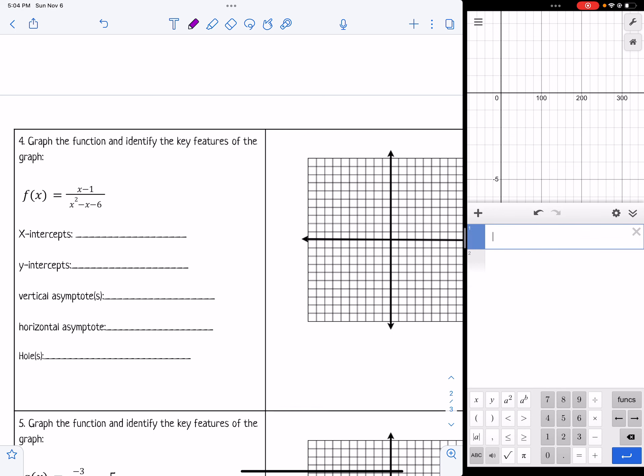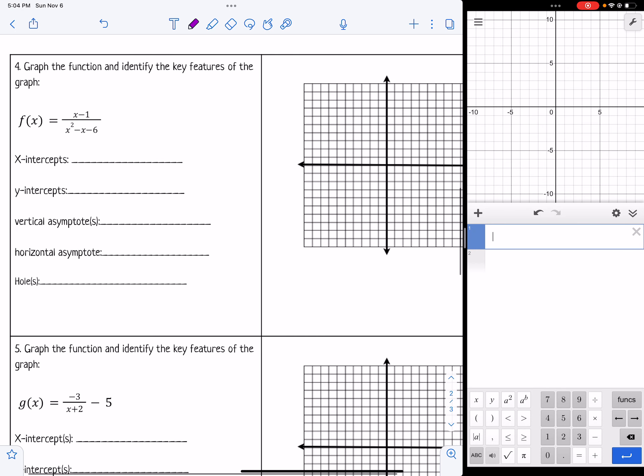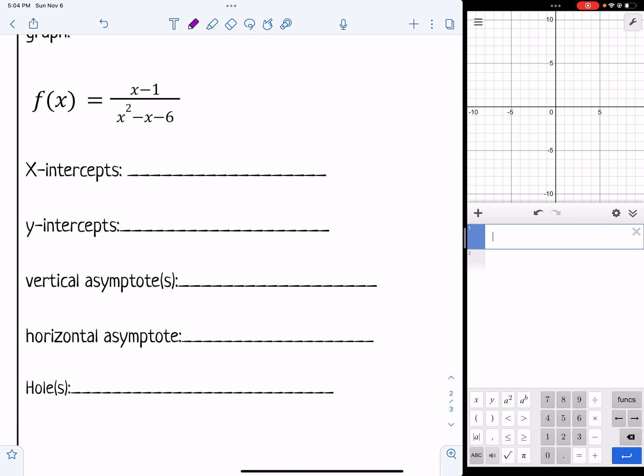So now that I have my calculator pulled up we can actually start on the graphing ones. So number 4 says graph the function and identify the key features of the graph. What I would do first with this one is factor everything out to see if I'm going to have any holes in the graph. Because that's where those come from.